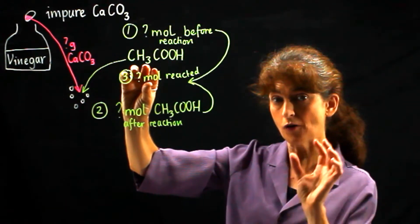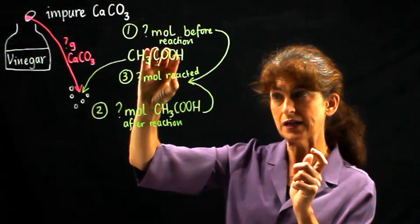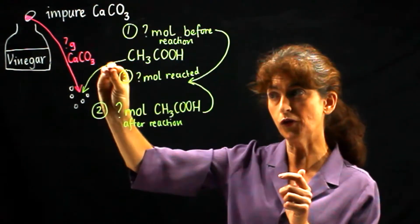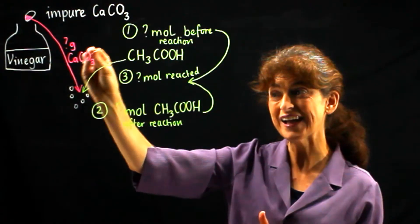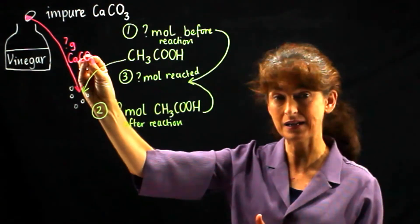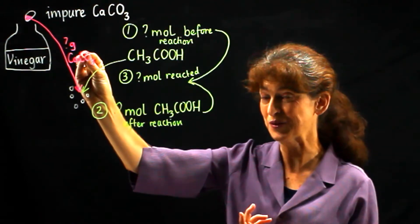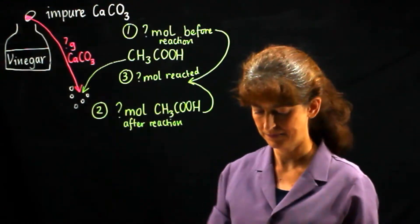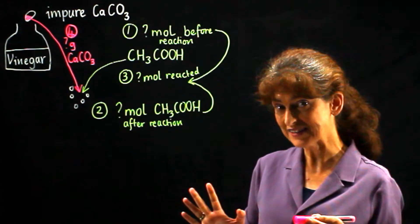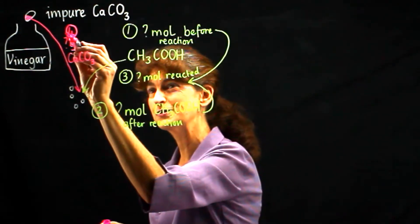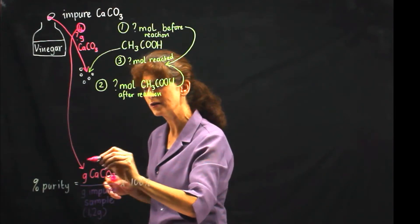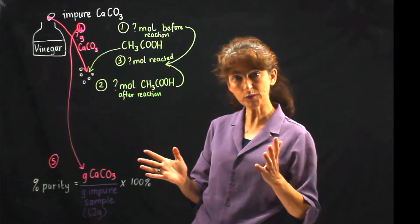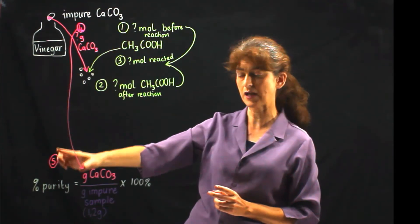We then make use of the reaction ratio between ethanoic acid and calcium carbonate to work out how much calcium carbonate must have reacted — in other words, how much pure calcium carbonate must have been present. When we've done that, we can simply substitute that into the percent purity equation and then we've got our final answer. So now what we need to do is to do each of these five calculations.